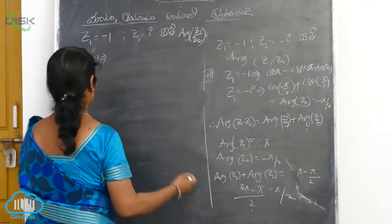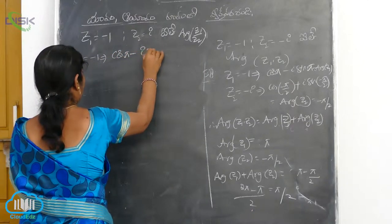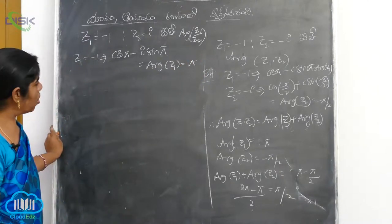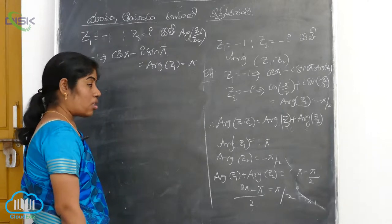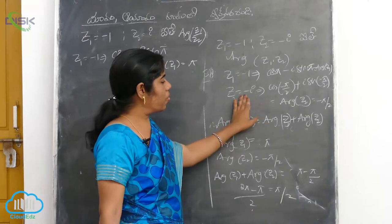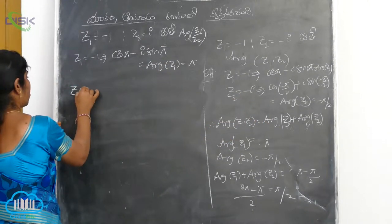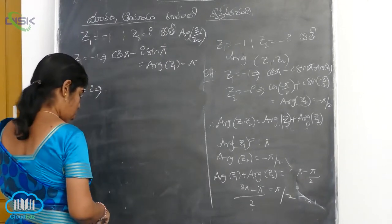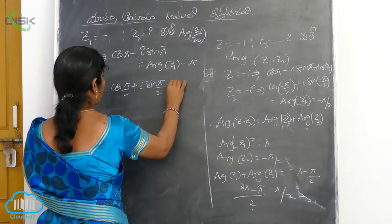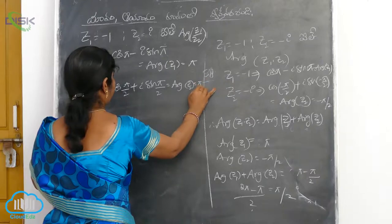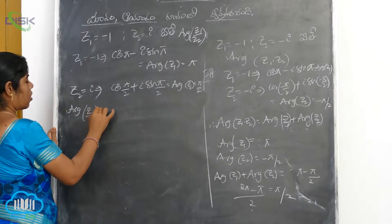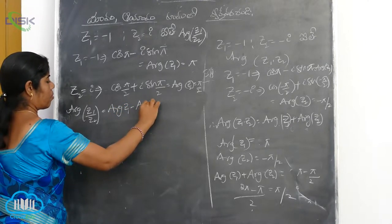Cos phi minus i sin phi. Then R equals 1, and the argument of Z2 is pi by 2. The argument of Z1 by Z2 equals the argument of Z1 minus the argument of Z2.